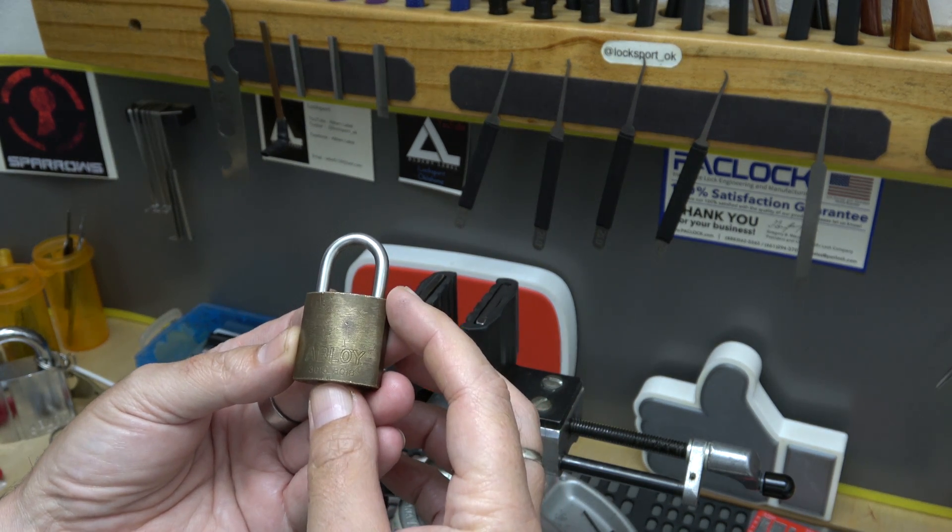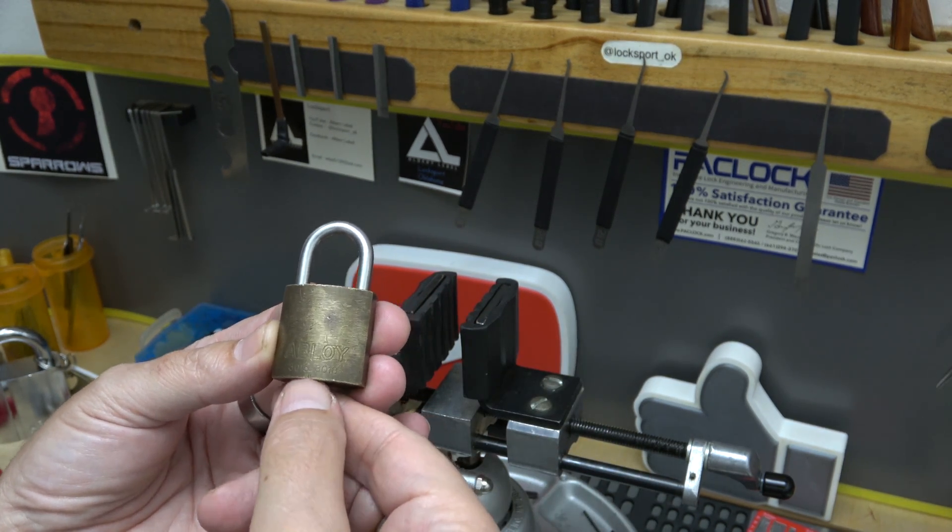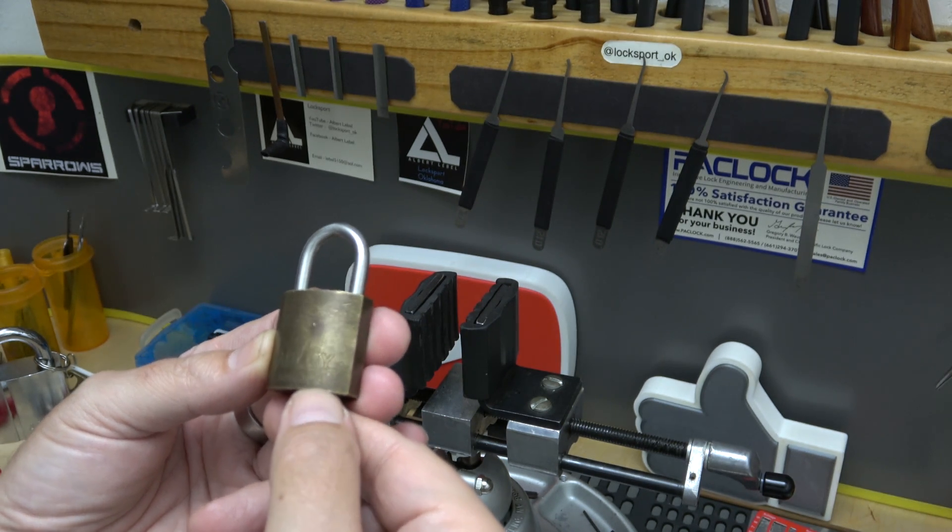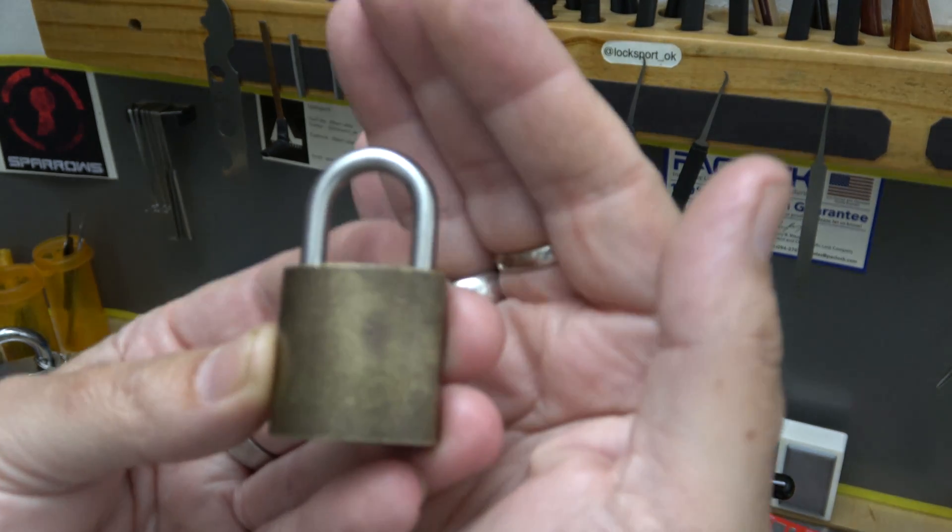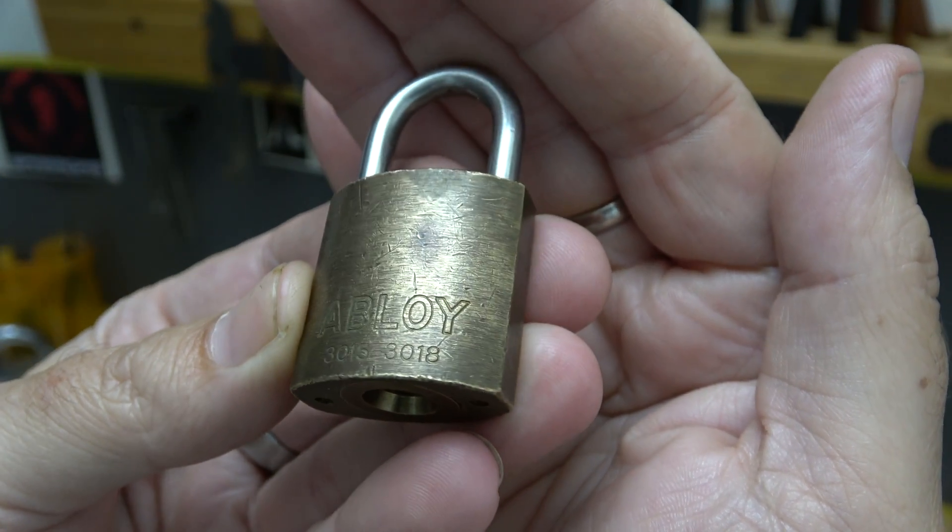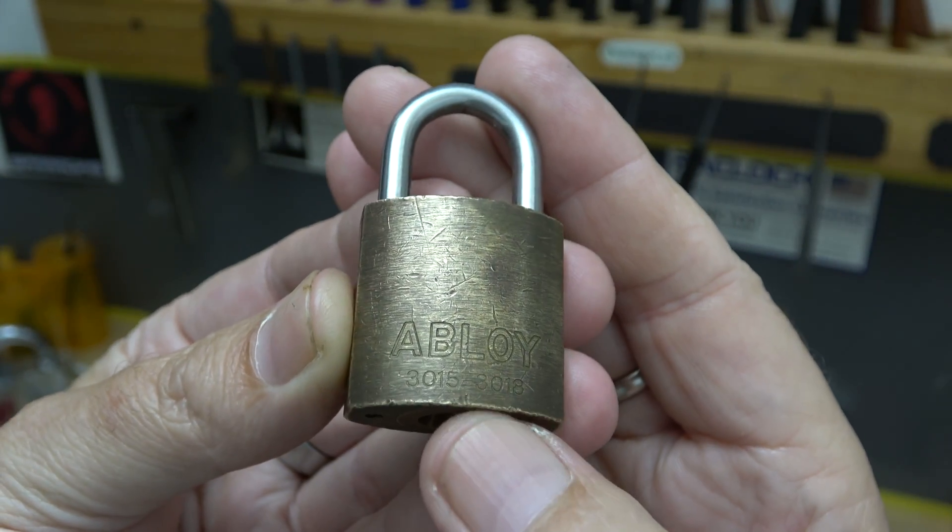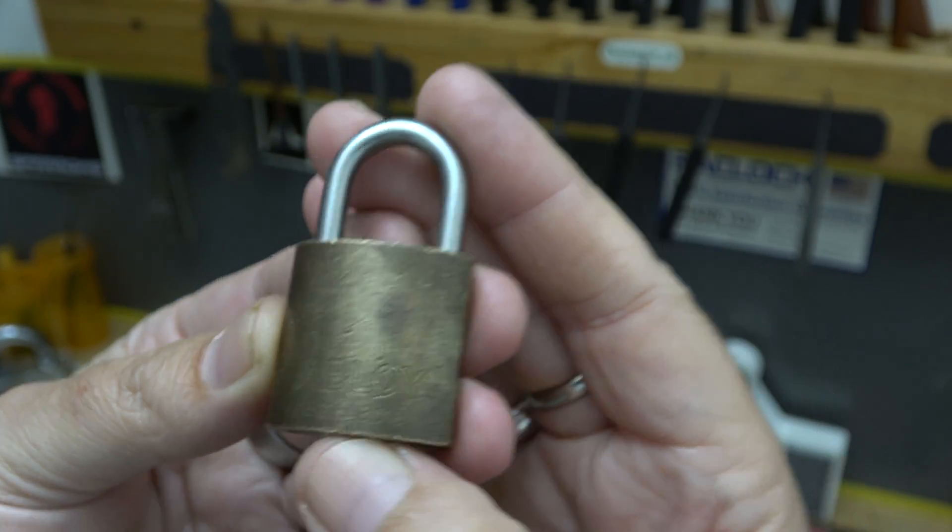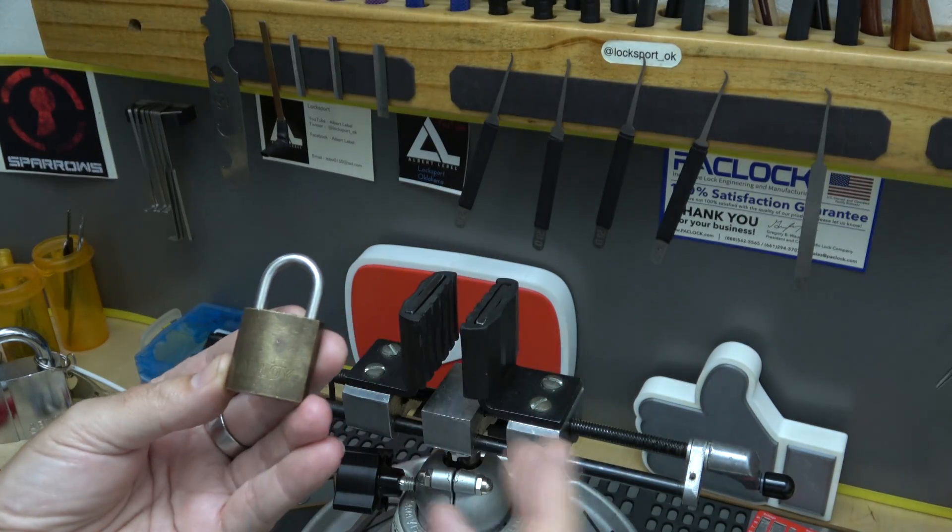It's an Abloy 3015. It actually says 3015-3018, very hard to see that on the lock. I don't know if it's going to pick that up right here along the bottom underneath the Abloy. Yeah, just a little dude.